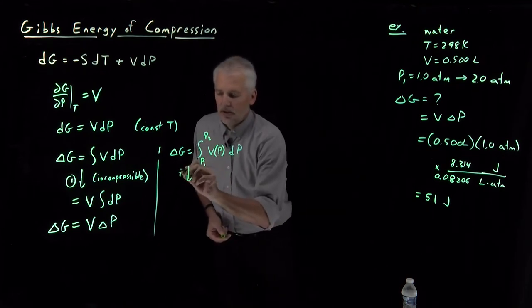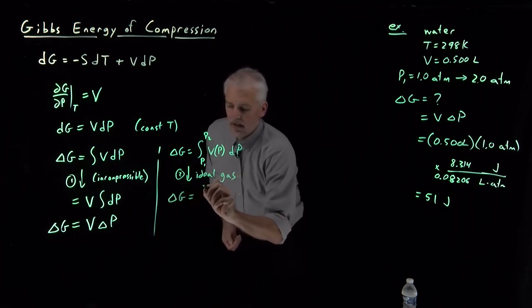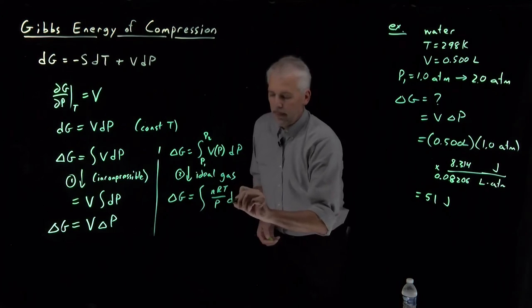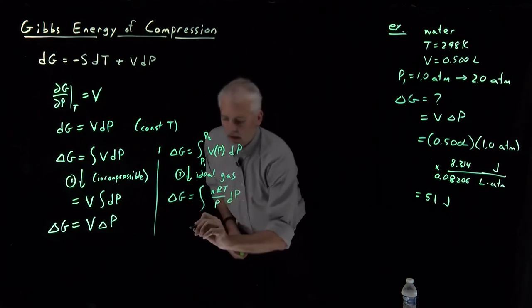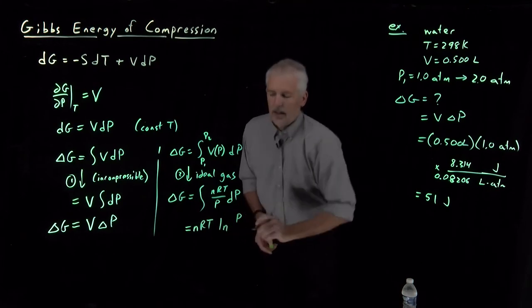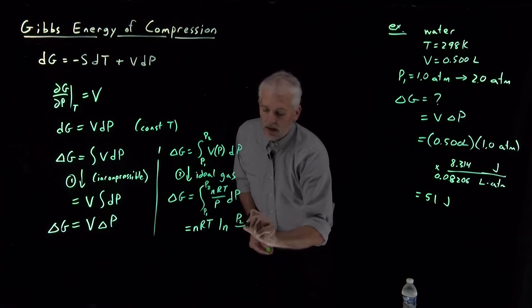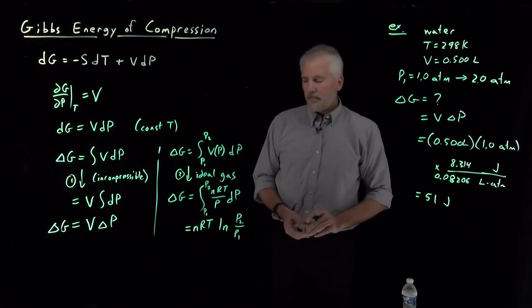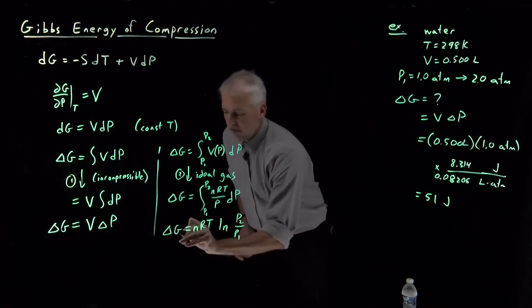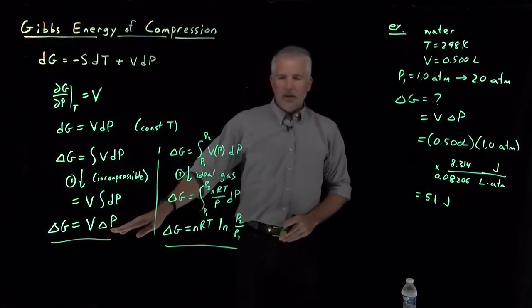If it's an ideal gas, here's our second set of conditions, for an ideal gas, we know exactly what the volume of an ideal gas is. It's nRT over P, but that's an integral we can do. If we've done this at constant temperature, the n and the R and the T can come out of the integral. The integral of 1 over P is just natural log of P, and if I evaluate that from P1 to P2, lower limit P1, upper limit P2, Ln of P2 minus Ln of P1 is the same as Ln of P2 over P1. So, this expression, delta G is nRT log P2 over P1, that's an expression we can use for the free energy of compression of an ideal gas. This expression would be the free energy of compression of an incompressible object.